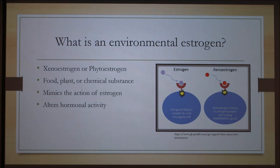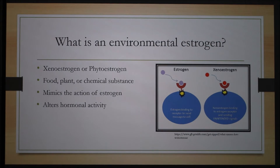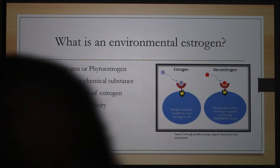An environmental estrogen is also known as a xeno or phytoestrogen. It is a food, plant, or chemical substance that mimics the action of an estrogen by binding to cell receptors in the body. Consequently, this alters hormonal activity and, if exposed to in large amounts, can permanently damage the reproductive system of the animal. Here we have a picture of these estrogens binding to the cell receptors in the body, sending an unintended signal.